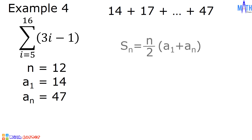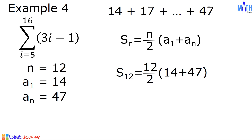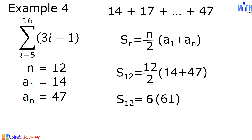Let us now find the sum. Using this formula and substituting the given values, we have S sub 12 equals 12 divided by 2 times the quantity 14 plus 47. 12 divided by 2 equals 6, and 14 plus 47 equals 61. 6 times 61 equals 366. And that is the answer.